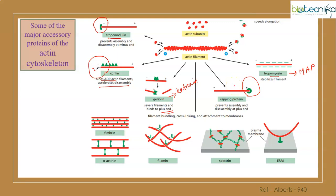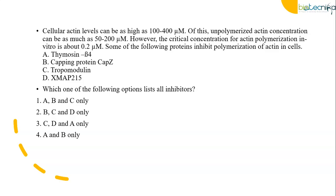Then some proteins categorized as filament bundling, cross-linking, and attachment to membranes - we have fimbrin, alpha-actinin, filamin, spectrin, and ERM. Let's go back to the question to understand the answer.